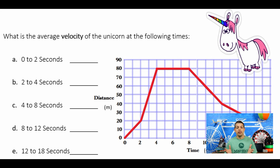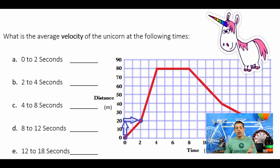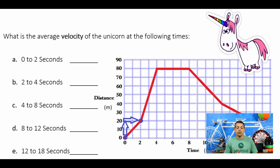First, I look at the points on the graph at each time interval. For 0 to 2 seconds, the y-axis goes from 0 meters up to 20 meters at 2 seconds. So the change in distance — the rise — is 20 meters, and the change in time is 2 seconds. 20 meters divided by 2 seconds gives a velocity of 10 meters per second.